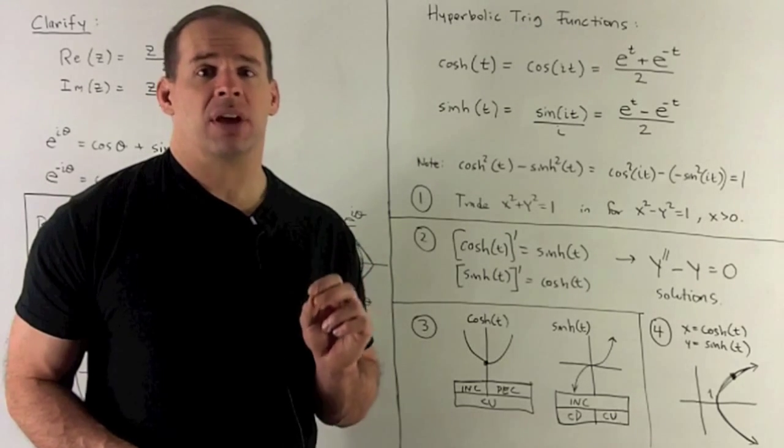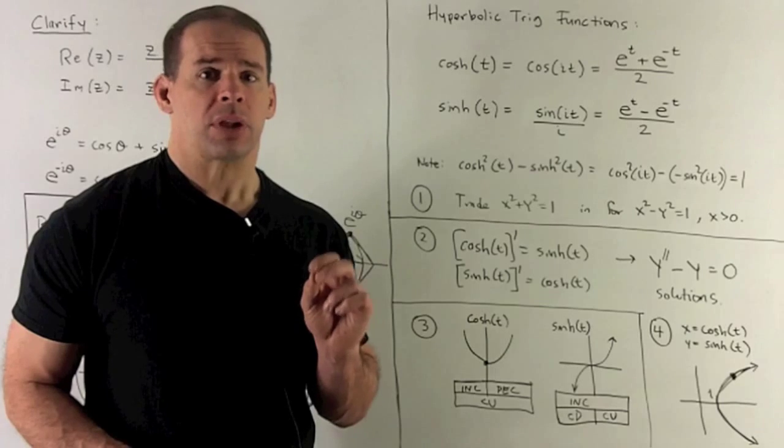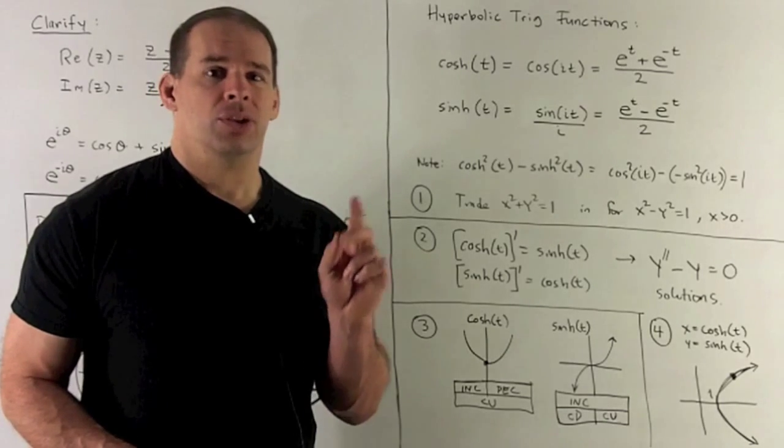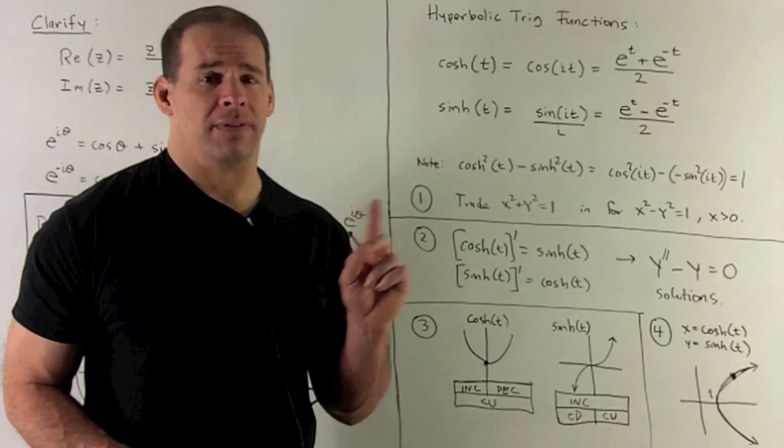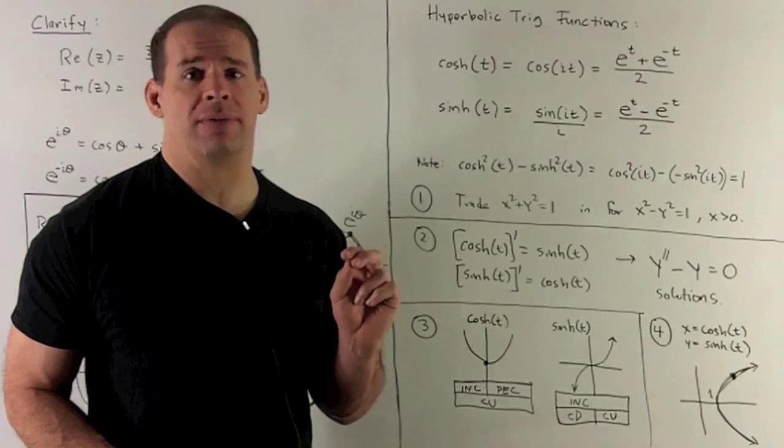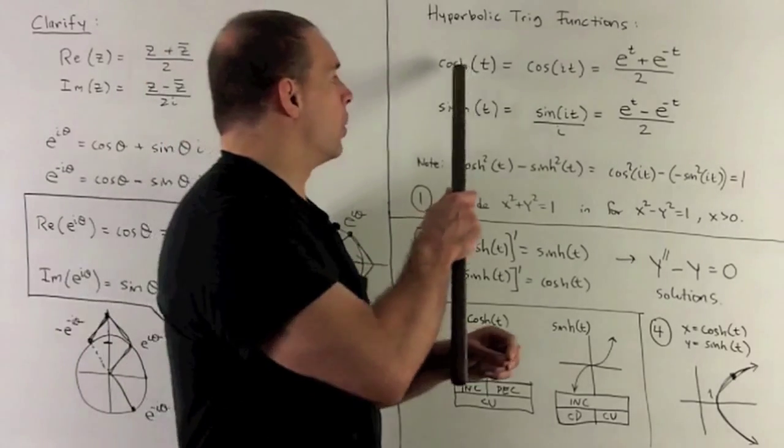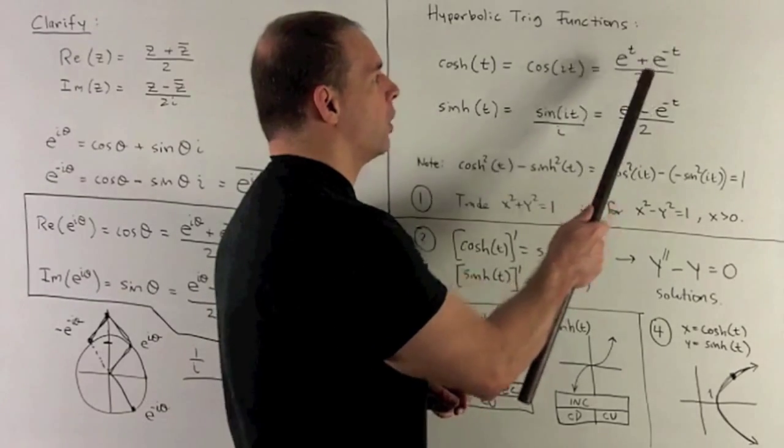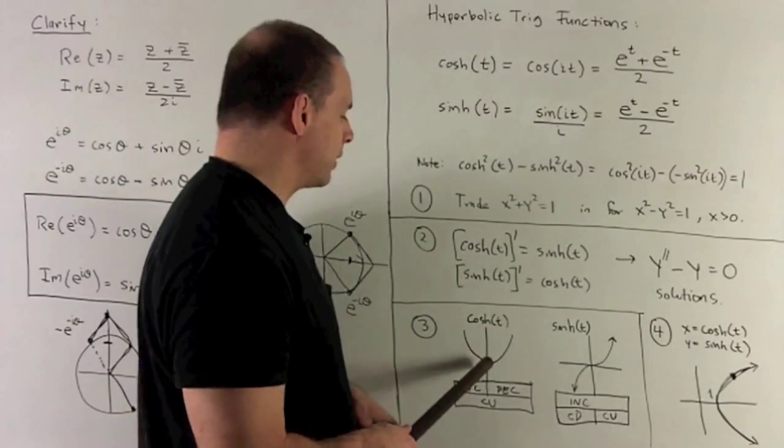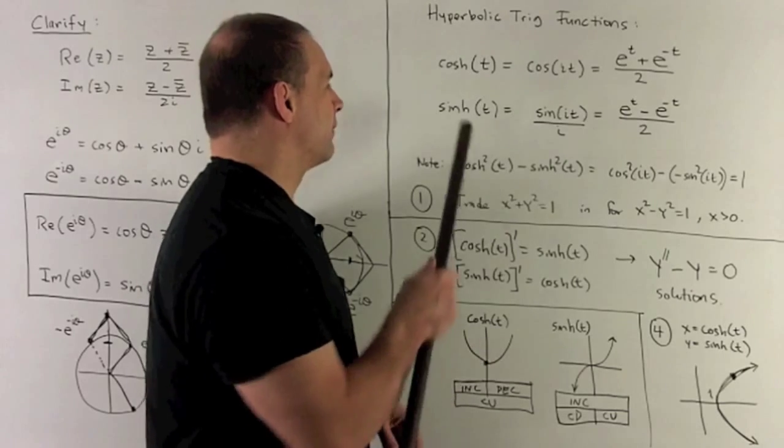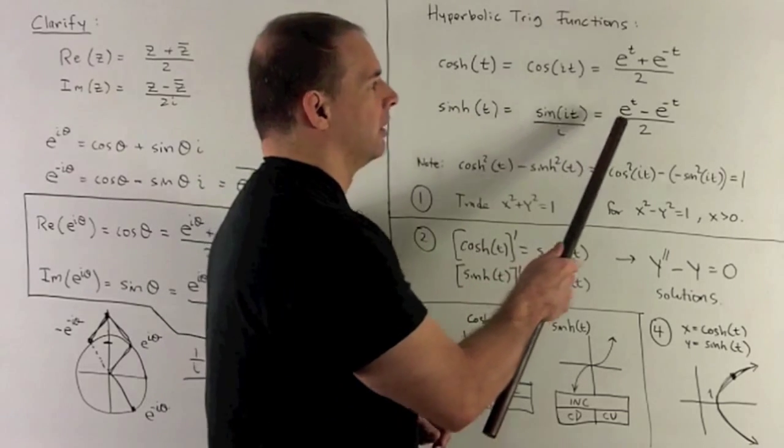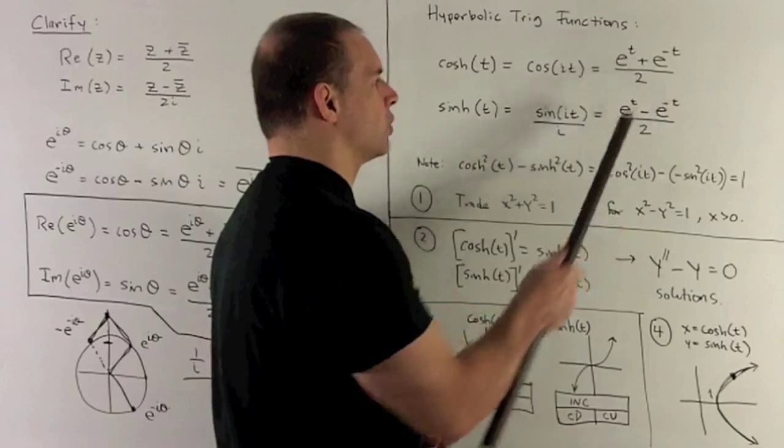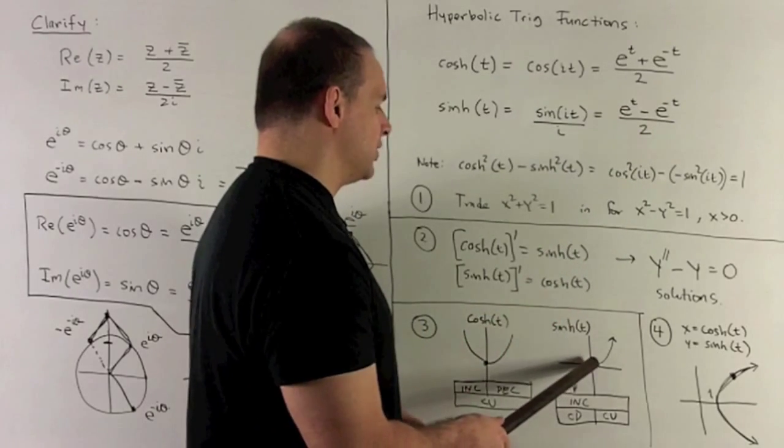Final thing would be the graphs of cosh and sinh. We can get two specific points off each of the functions if you put zero in for the equation. Cosh of zero: e to the zero is one, so we have one plus one over two, which gives me one. That gives me a point there. For sinh of zero, e to the zero minus e to the zero is one minus one, so we get a point at zero.